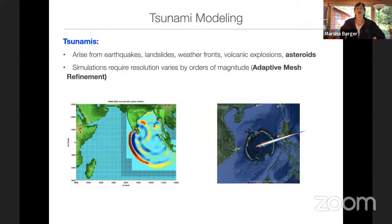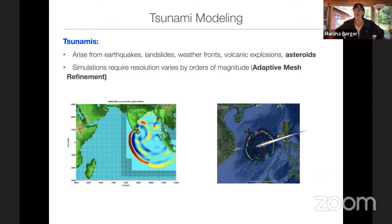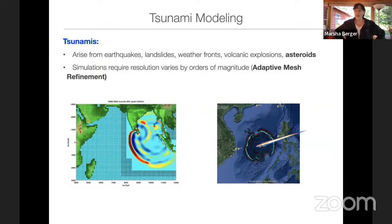I'm going to talk about tsunamis, which I've been working on modeling for a number of years — mostly earthquake-generated tsunamis, but they also arise from other phenomena. For example, landslides, both underwater and above water, can generate tsunamis. Weather fronts can generate tsunamis — these are called meteo tsunamis, generally over smaller bodies of water like lakes. Volcanic explosions can generate a tsunami; we just saw an example with the Hunga Tonga volcano a couple of months ago. And my new project involves asteroid-generated tsunamis.